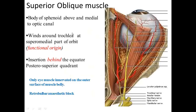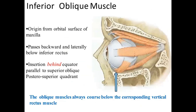The superior oblique muscle takes origin from the body of the sphenoid, above and medial to the optic canal. It winds around the trochlea at the superior medial part of the orbit — the trochlea is its functional origin. It inserts behind the equator in the posterior superior quadrant, just below the superior rectus. It is the only eye muscle innervated on the outer surface of the muscle belly, so a retrobulbar nerve block can be given.